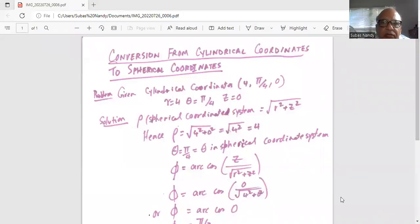Conversion from cylindrical coordinates to spherical coordinates. Given cylindrical coordinates 4, pi by 4, and 0. That means in cylindrical coordinate system r is equal to 4, theta equal to pi by 4, and z is equal to 0.